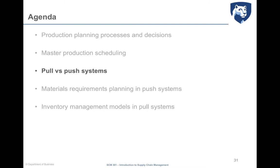In the previous class we have seen how in a supply chain, and in particular for the production activities, it is possible to schedule how many units of each product need to be realized in which period through the master production schedule, using different approaches to distinguish between chase and level approaches. Before going on to the next step, which is material planning, we need to clarify an important point: the difference between the pull and push logic.